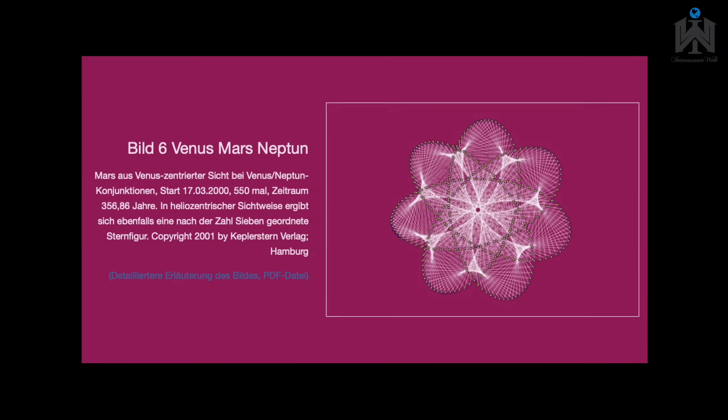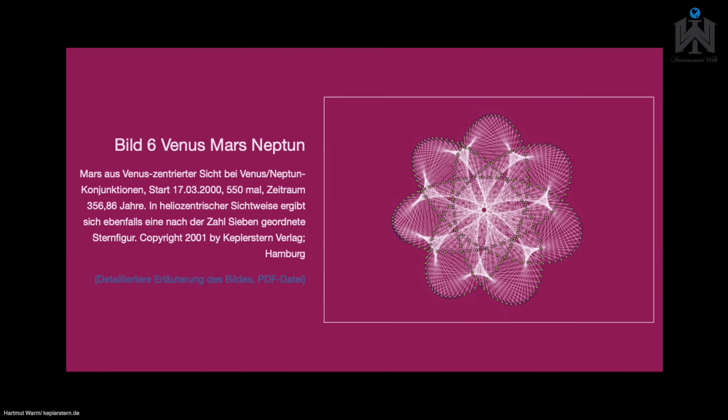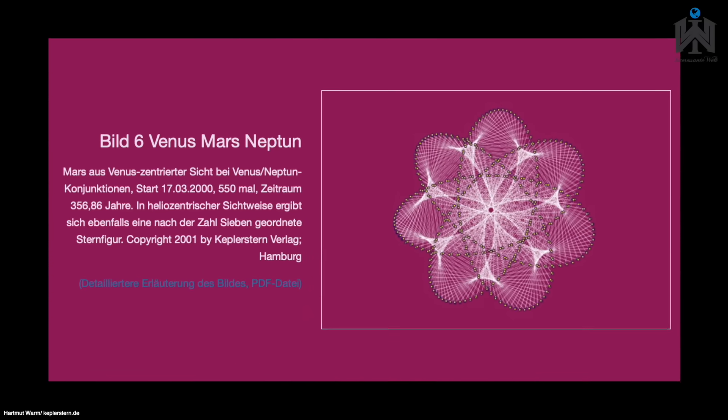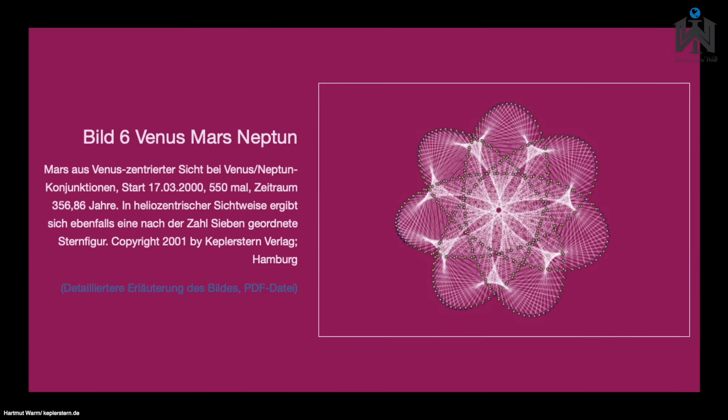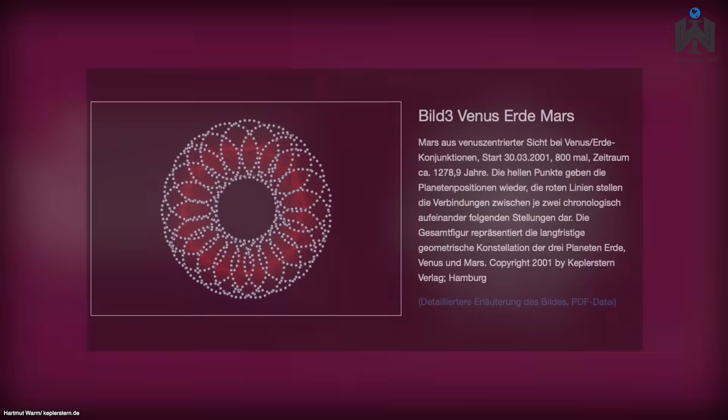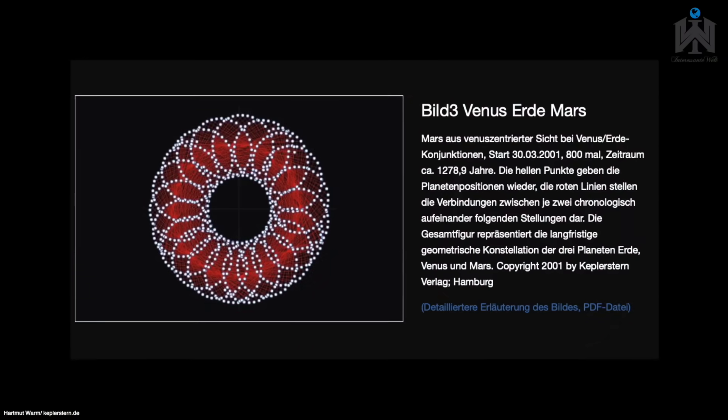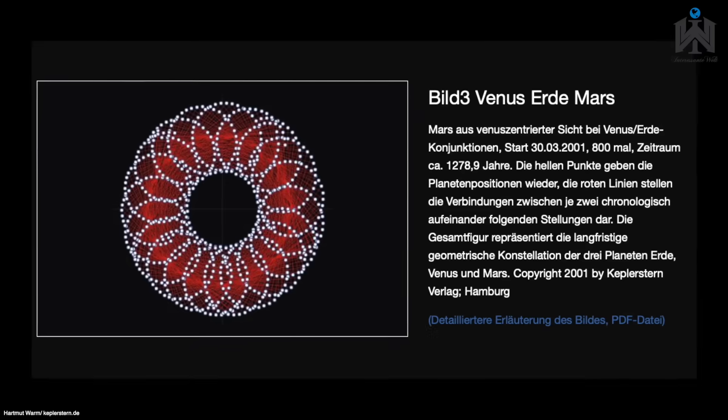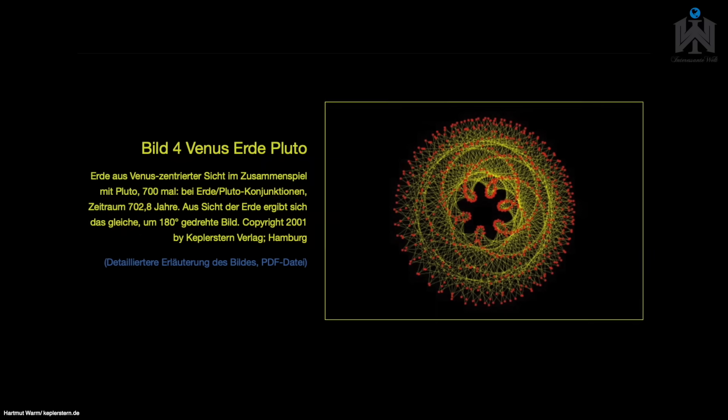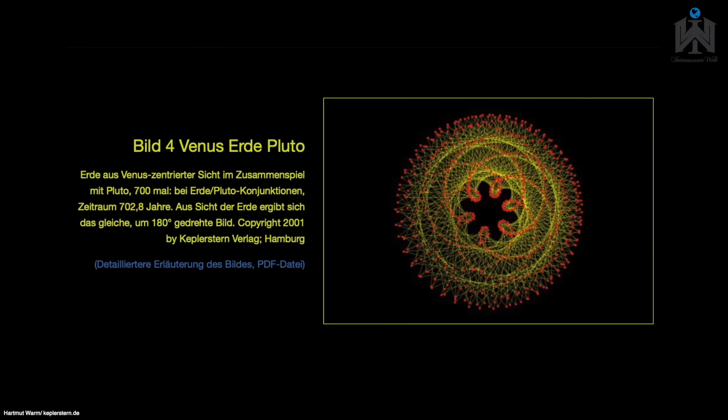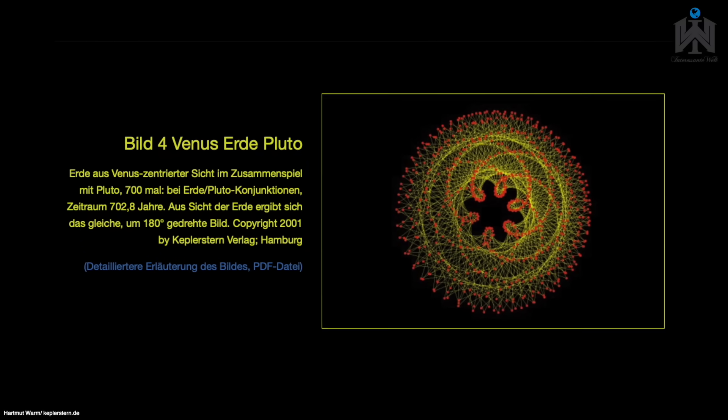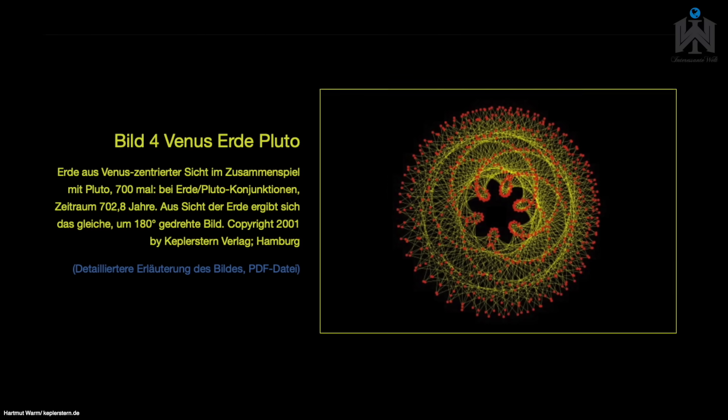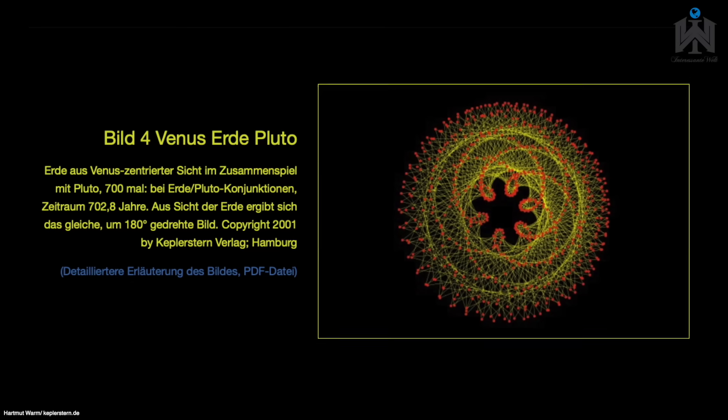Hier das Bild vom Mars aus Venus zentrierter Sicht bei Venus-Neptun-Konjunktion. Und hier Mars aus Venus zentrierter Sicht bei Venus-Erde-Konjunktion. Erde aus Venus zentrierter Sicht im Zusammenspiel mit Pluto. Ihr seht, dass die verschiedensten Konstellationen von Parametern gewählt wurden.